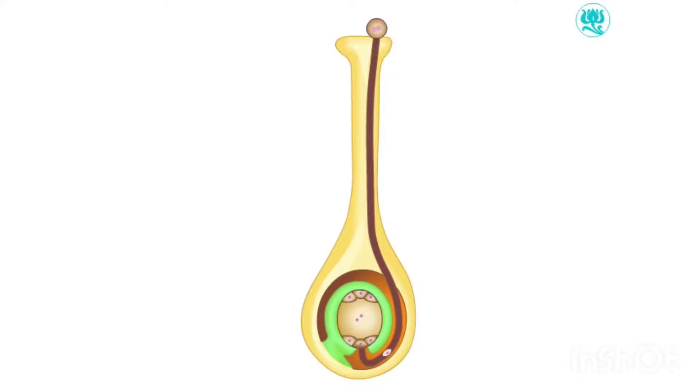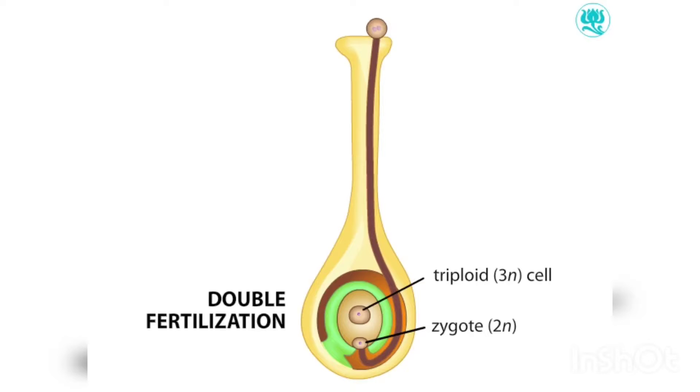One fertilizes the egg, forming a diploid zygote. The other fertilizes two polar nuclei, forming a triploid cell. The fertilization of both the egg cell and the central cell is called double fertilization, a hallmark of the life cycle of angiosperms.